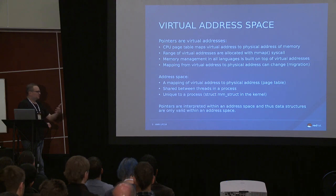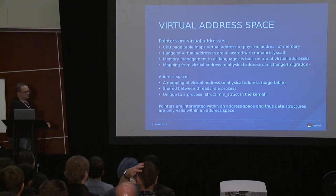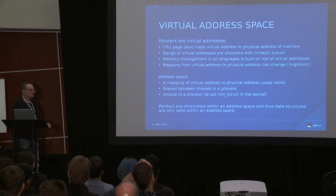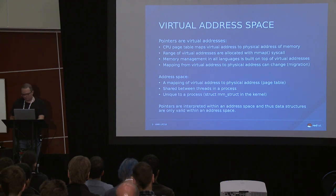An address space is unique to a process — that's how you have isolation between processes. Your process has its own address space and processes don't see each other's address space. The end result is that all pointers are interpreted against an address space. A pointer doesn't mean anything if you don't have a mapping between the virtual address and the physical address.